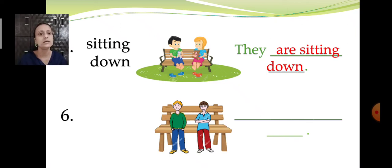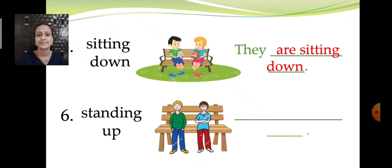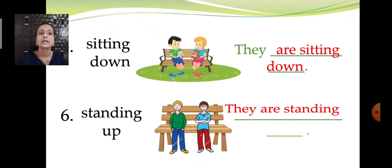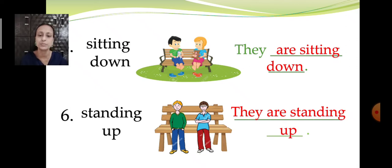Now let us go to the sixth question. Again there are two children. So you are going to write 'they'. Standing — standing up. In the previous question the boys were sitting, but here it is standing. So how do we write? They are standing up. The options are given, so it should be very easy for you all to copy and write. But learn the spellings also: S-T-A-N-D-I-N-G. Standing. Up.